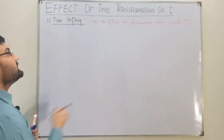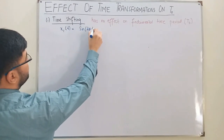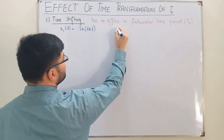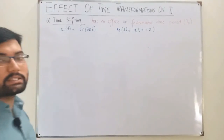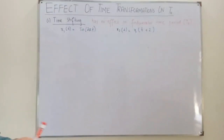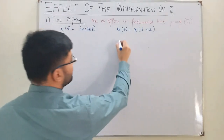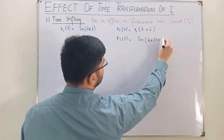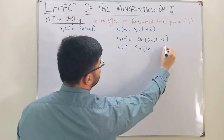We explain through an example. Let's say x1(t) = sin(2πt). Now we shift this signal: x2(t) = x1(t + 2). Putting (t + 2) in place of t in x1, we get x2(t) = sin(2π(t + 2)).